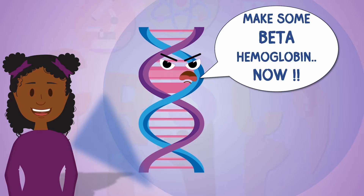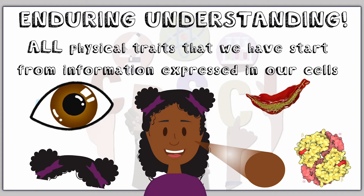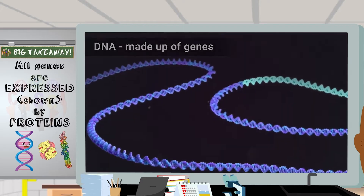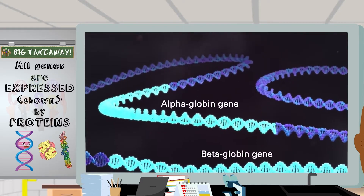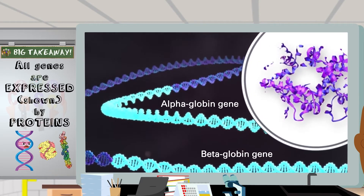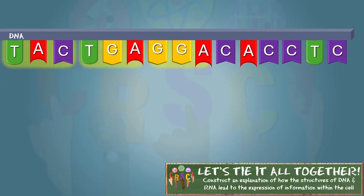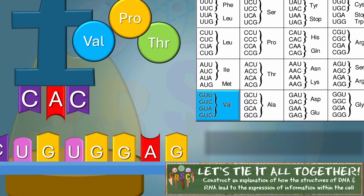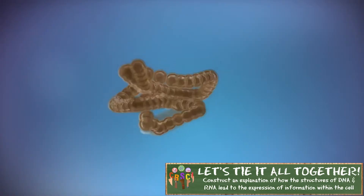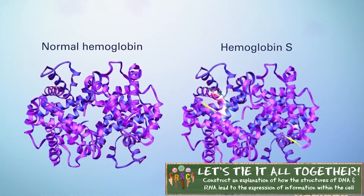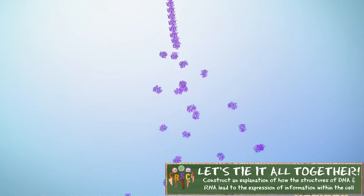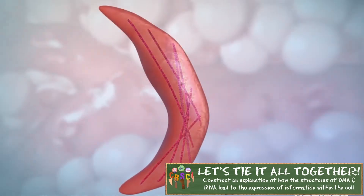Her DNA ordered her cells to make that beta hemoglobin. Everything that is physical about us comes from our DNA, and every gene is expressed or shown by a protein. What protein did that gene make? Well, the protein that was just translated — that's beta hemoglobin. The protein that causes blood cells to be sickle, like in sickle cell anemia.